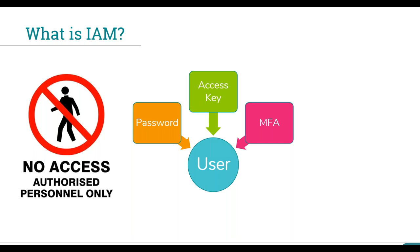There are two different types of credentials mainly. A user is effectively a person or system that needs access to AWS — they can have a password used for the management console only. For more programmatic access such as CLI or APIs, you'll need an access key. My advice: if you have users who will only ever use the management console, don't give them an access key — and that applies to the root user as well. You should never be using the root user for day-to-day operations.